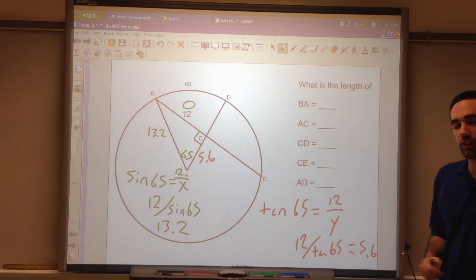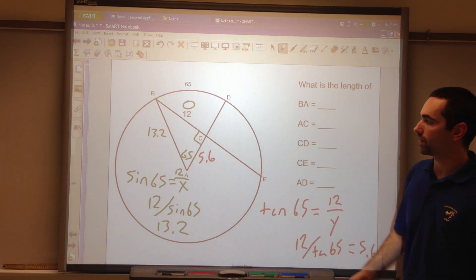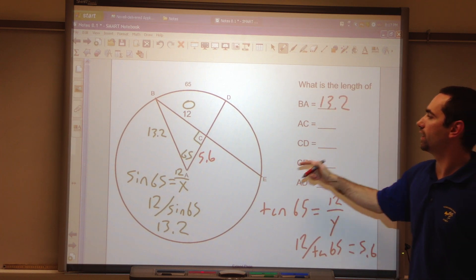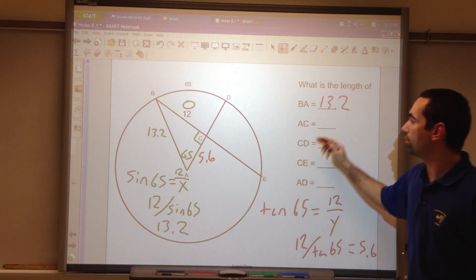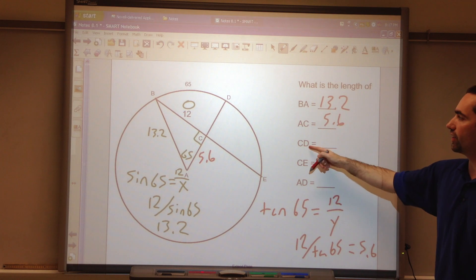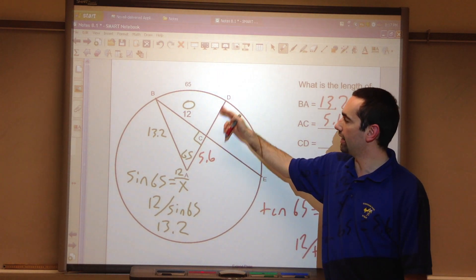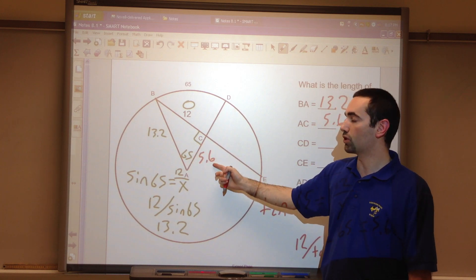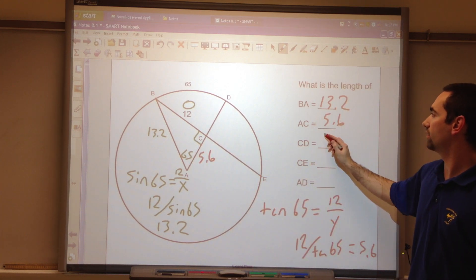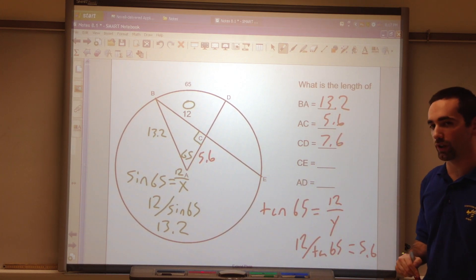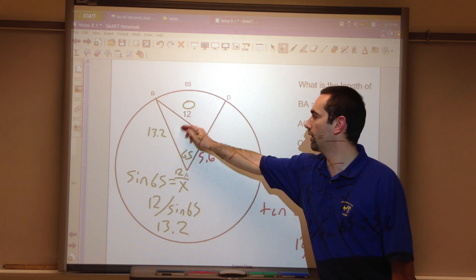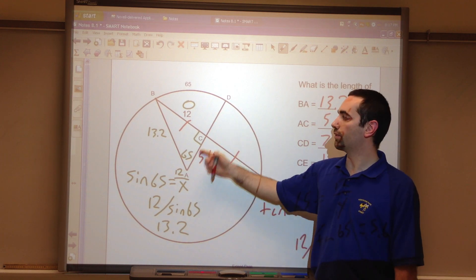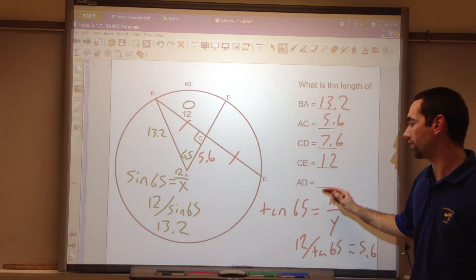So let's fill in some information here. AB, 13.2. AC, 5.6. CD. That's this length. The whole thing is the radius. 13.2. Subtract 5.6. 7.6. CE. Congruent. So it's 12. AD is the radius, which is 13.2.